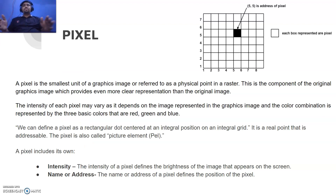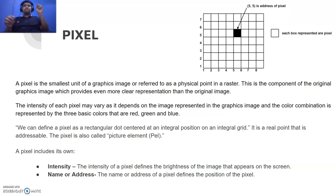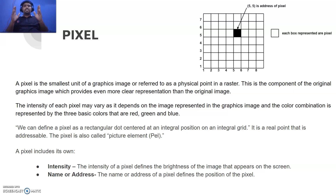Everything comes onto the screen because of the pixel. A line with endpoints and a slope, or a circle with a center and radius — these all appear on screen only with the help of pixels. A pixel is the smallest unit of a graphic image, referred to as a physical point in a raster. It is a component of the original graphic image that provides a clear representation, and its intensity may vary depending on the image. Color is represented by the three basic colors: red, green, and blue — RGB.